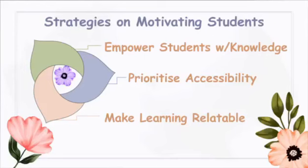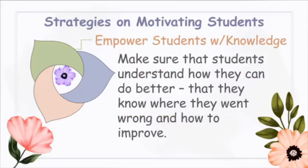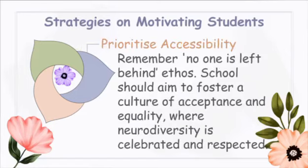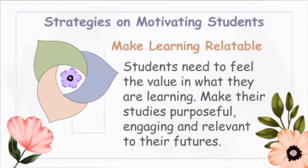We have three strategies on motivating students: empower students with knowledge, prioritize accessibility, and make learning relatable. To empower students with knowledge, make sure students understand how they can do better — that they know where they went wrong and how to improve. To prioritize accessibility, remember no one is left behind — schools should foster a culture of acceptance and equality where neurodiversity is celebrated and respected. To make learning relatable, students need to feel the value in what they are learning; make their studies purposeful, engaging, and relevant to their futures.